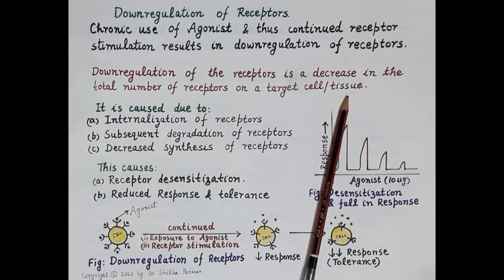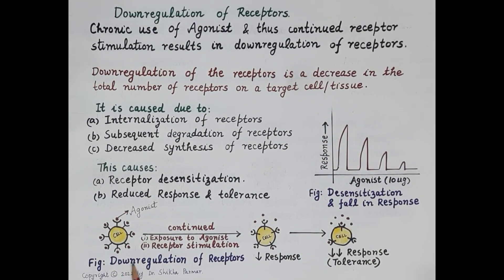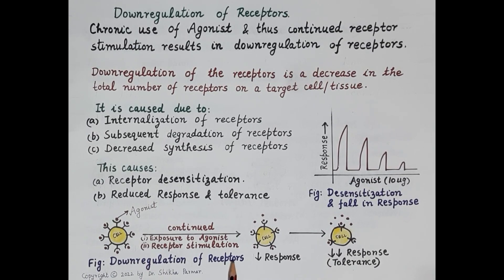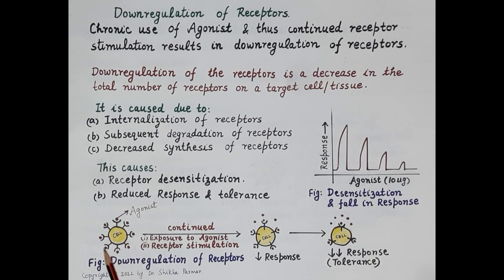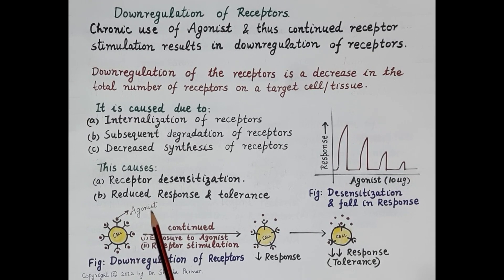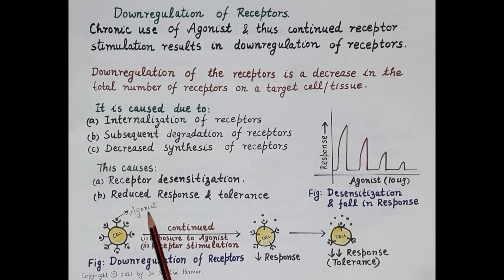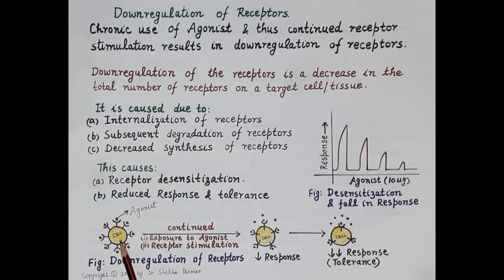This figure explains the phenomenon of down regulation. A target cell — let's say it is a bronchial smooth muscle — has receptors on it, let's say beta-2 receptors. The agonist here is salbutamol. Salbutamol stimulates beta-2 receptors, causing relaxation of smooth muscles and leading to bronchodilation — dilation of the bronchi — so salbutamol is a drug of choice for treatment of asthma.